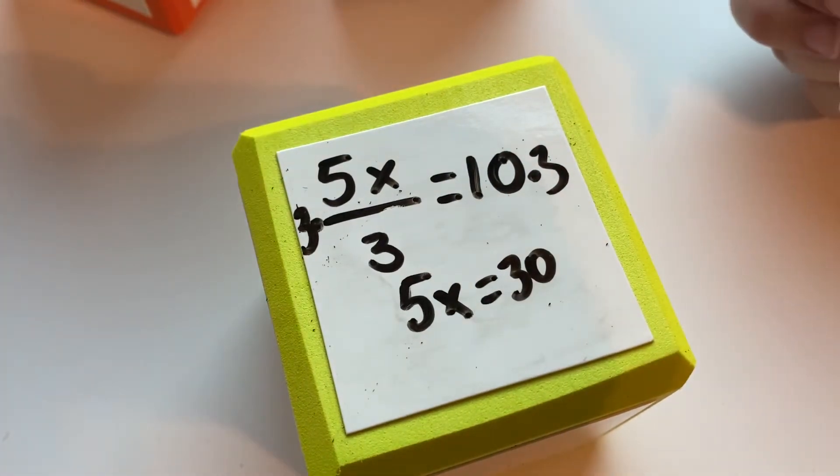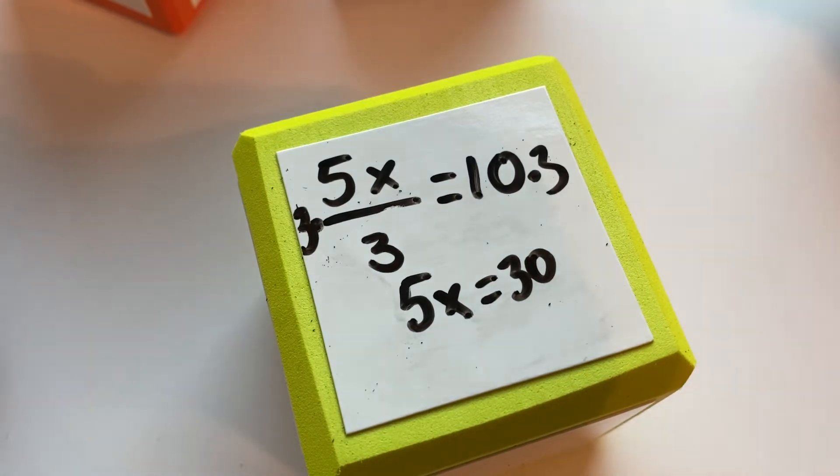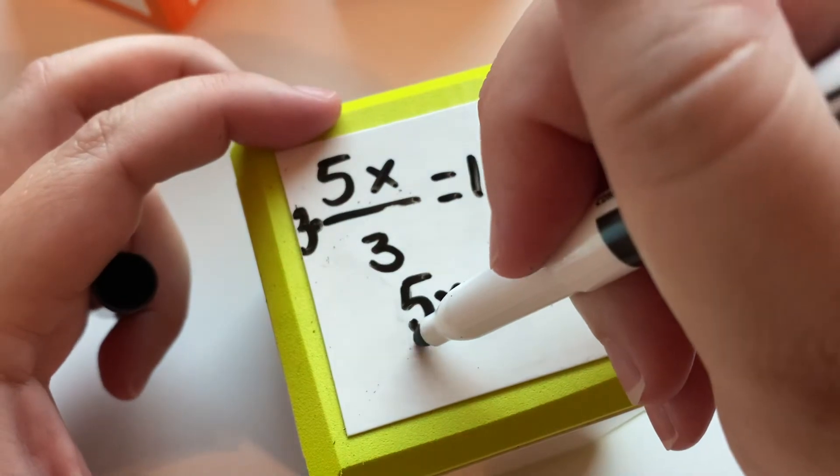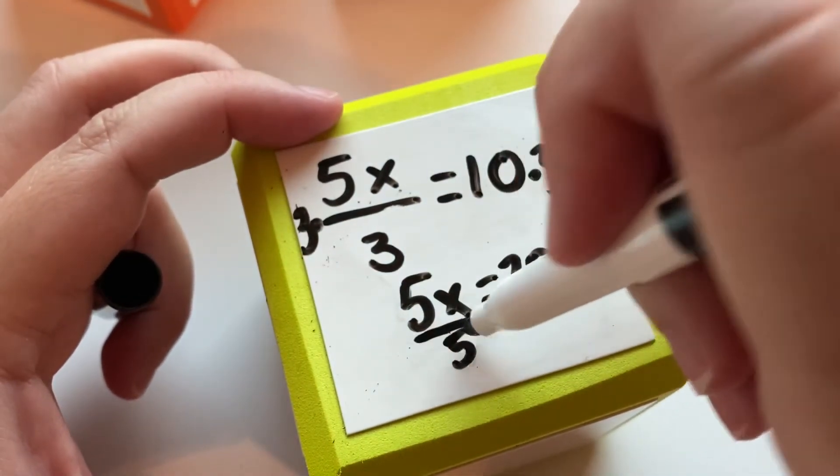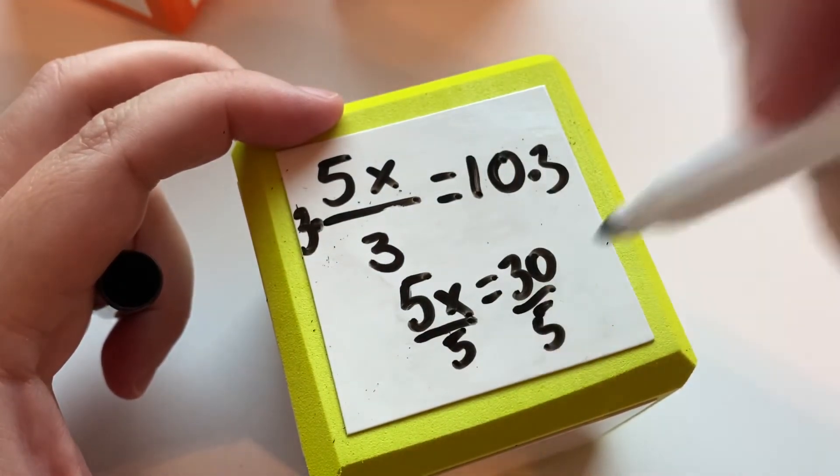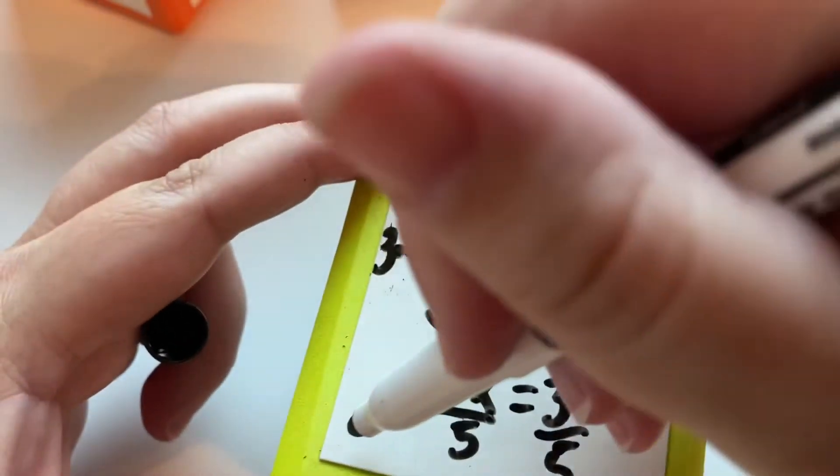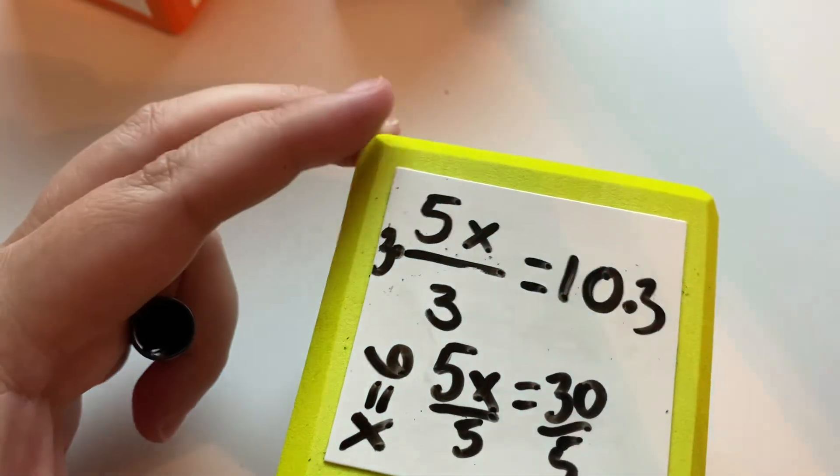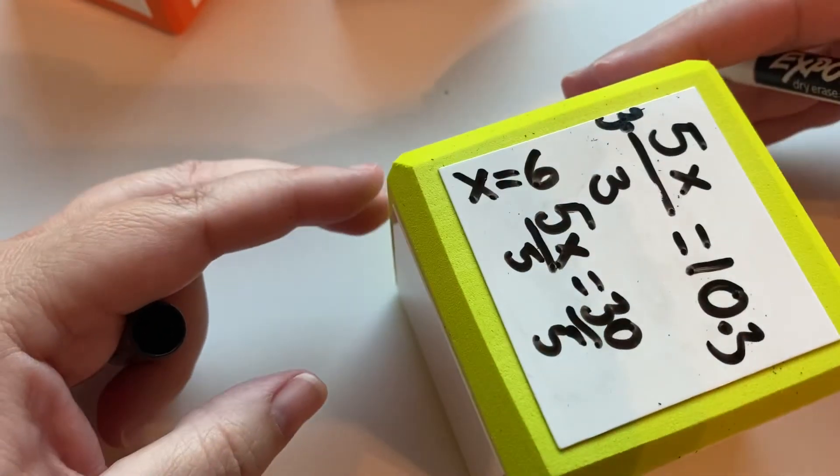Now after you've done so many of these, you're probably starting to see, oh, 5x equals 30, I know what that is. I know that 5 times 6 equals 30. So you're probably being able to start doing some of this with mental math, which is great. I really hope you're getting to that place. So then we're going to divide both sides by 5. So we're going to get x equals 6.